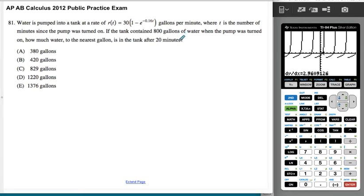Okay, so this is probably a calculator required, right, if we're looking at this. See how these are ugly decimals? Water is pumped into a tank at this rate, where t is the number of minutes since the pump was turned on. If the tank contained 800 gallons of water when the pump started, how much water is in the tank after 20 minutes?